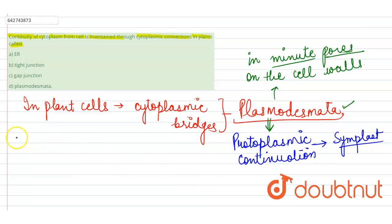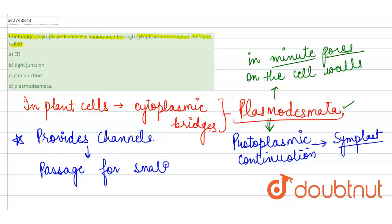If we talk about the function of this plasmodesmata, the function of the plasmodesmata is that it provides channels for the passage of substances that are small-sized particles. It provides passage for small-sized particles, such as certain ions and molecules.